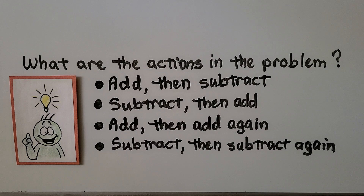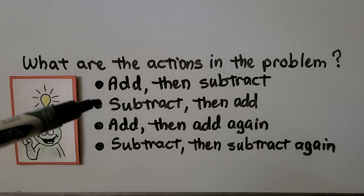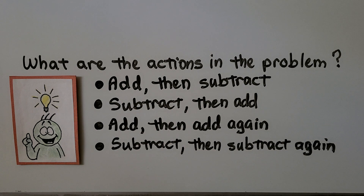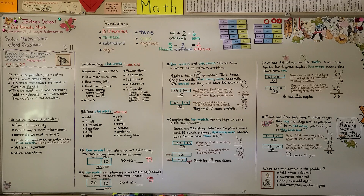When trying to figure out what operation to use — add or subtract — we need to ask ourselves what the actions in the problem are. Are we giving something away? Getting more of something? Combining? Do we add then subtract, subtract then add, add then add again, or subtract then subtract again? We have to look at the actions in the problem to know. We're moving on to chapter six, which is all about three-digit addition and subtraction, and there'll be some regrouping in there too. I hope you'll join me there, and I hope you have a really good day. Bye!